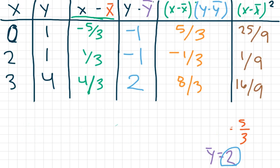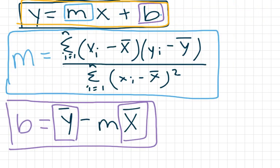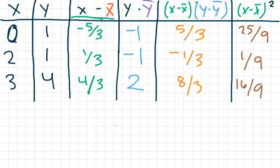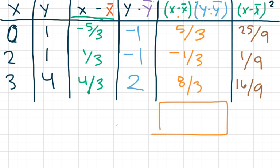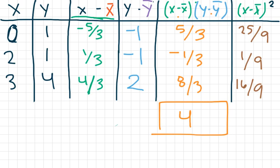Now let's go back to our formula. I need to take the sum of the column where I multiplied (x minus x̄) times (y minus ȳ) for each point. Five thirds minus one third is four thirds, plus eight thirds gives me twelve thirds, and twelve thirds simplifies to four. So the sum of that column is four.